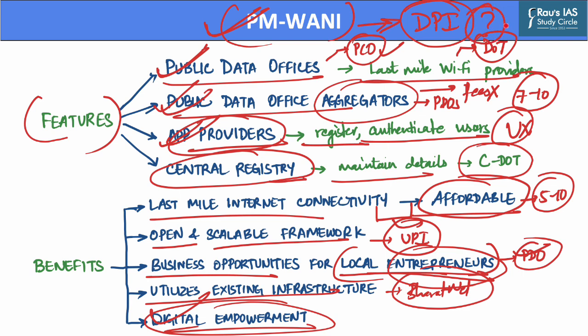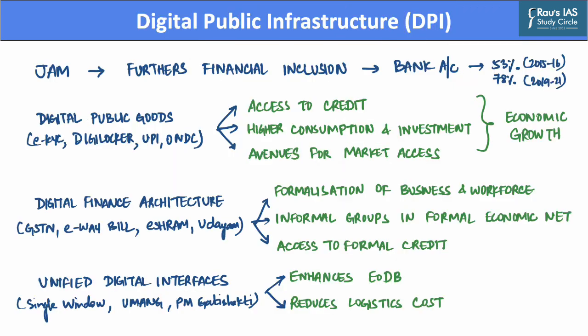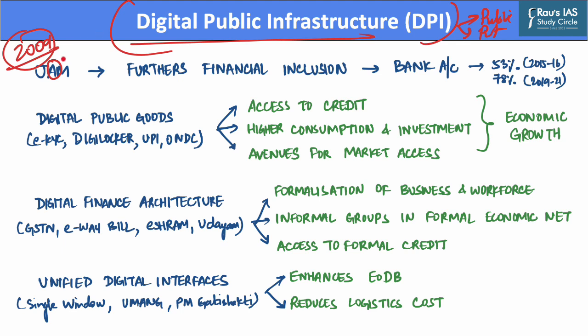Now, what is digital public infrastructure? Digital public infrastructure refers to solutions and systems that enable the provision of essential society-wide functions and services for both public and private sectors. These include digital identification and verification, civil registration, payment systems, data exchanges and information systems. Digital public infrastructure in India was first introduced in 2009 with the launch of the Aadhaar scheme. The first and most foundational aspect of digital public infrastructure is the JAM initiative — Jan Dhan accounts, Aadhaar and Mobile — which furthers financial inclusion. The population covered with bank accounts increased from 53% in 2015-16 to 78% in 2019-21.